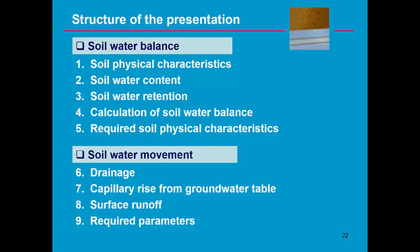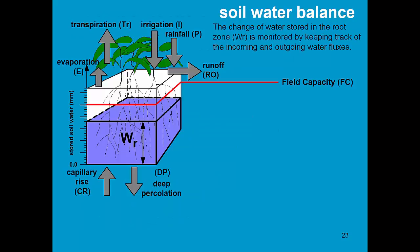Let's continue with the calculation of the soil water balance. When calculating the soil water balance, we track changes in soil water content by considering all incoming and outgoing water fluxes. By expressing the water content in the root zone as an equivalent depth, the calculation becomes easy because rainfall, irrigation, and transpiration are all expressed as an equivalent depth — millimeters of water per day.